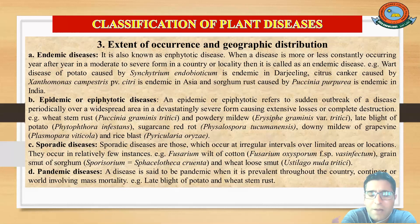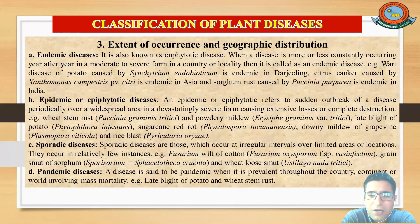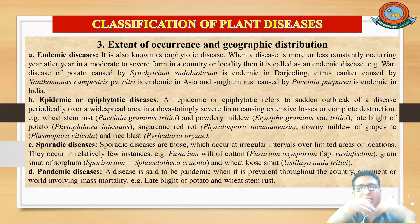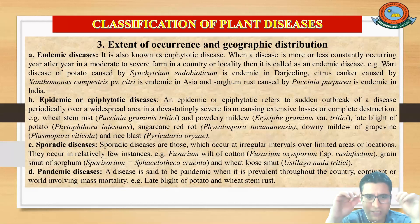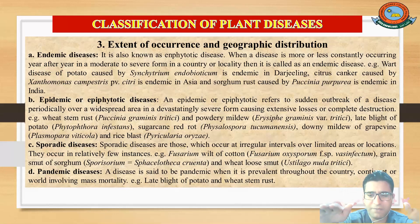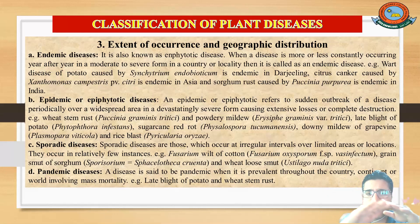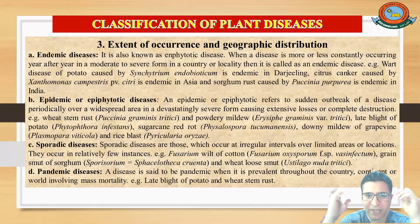The second type is epidemic or epiphytotic disease. When it occurs in plants it is called epiphytotic disease. This type of disease suddenly breaks out and is widespread over a large area. The extent of destruction is more than compared to endemic disease.